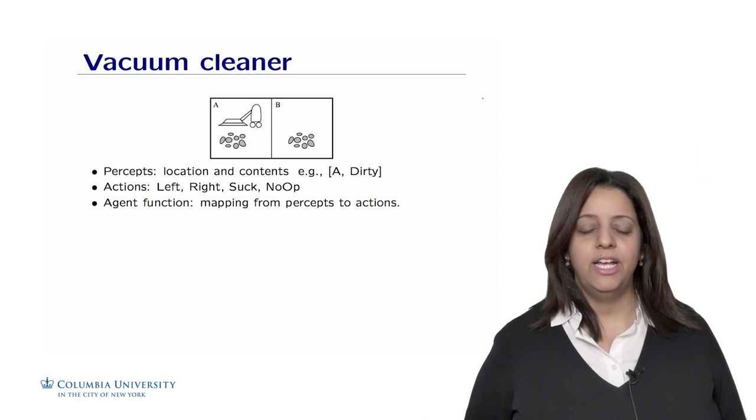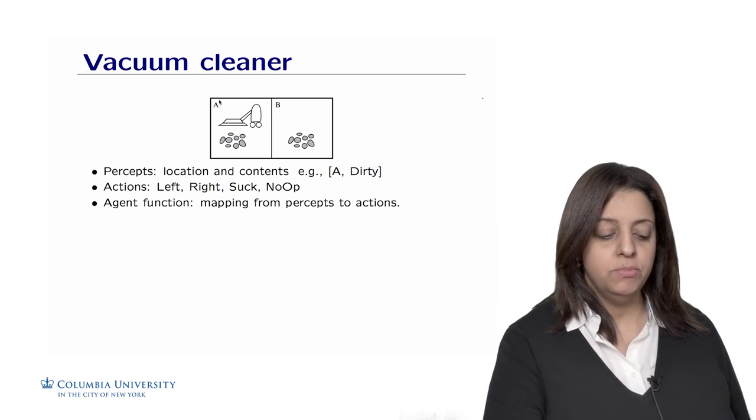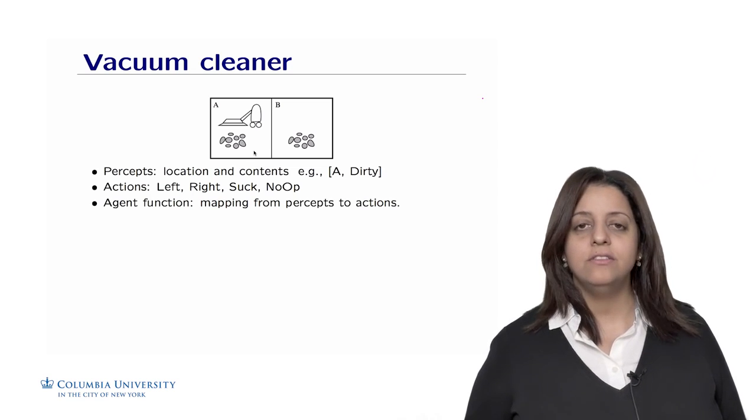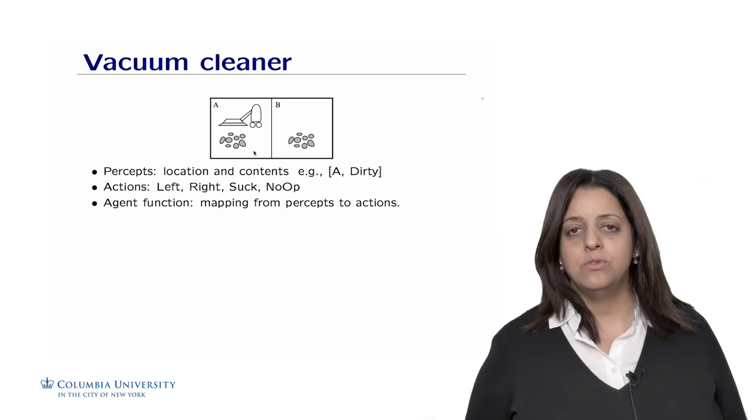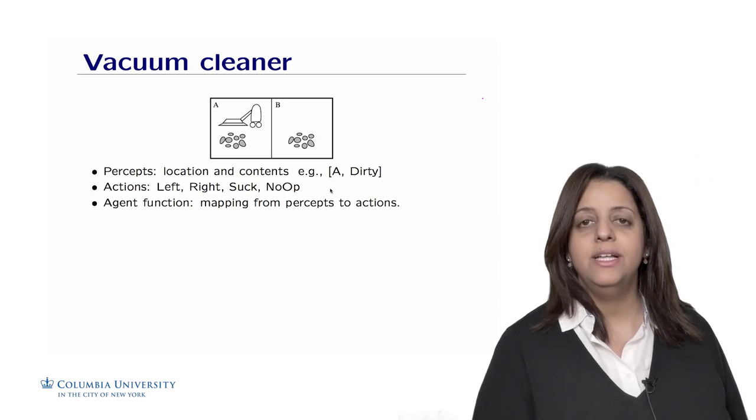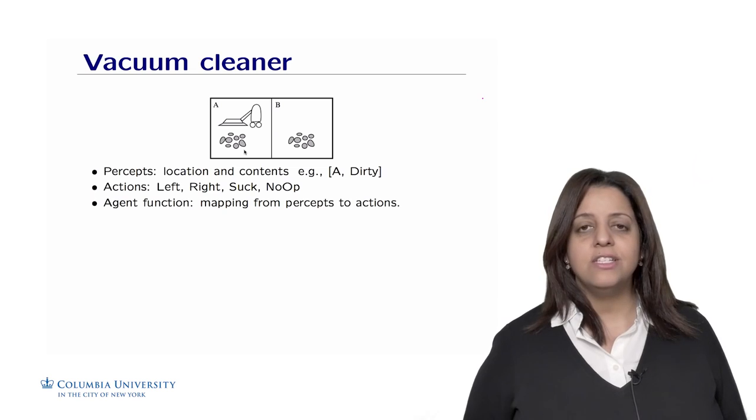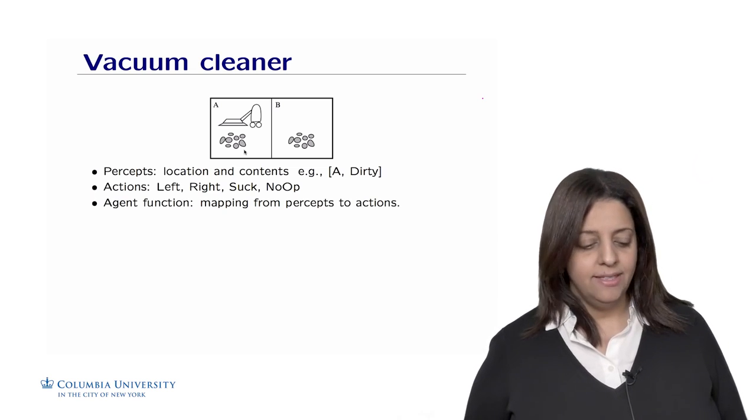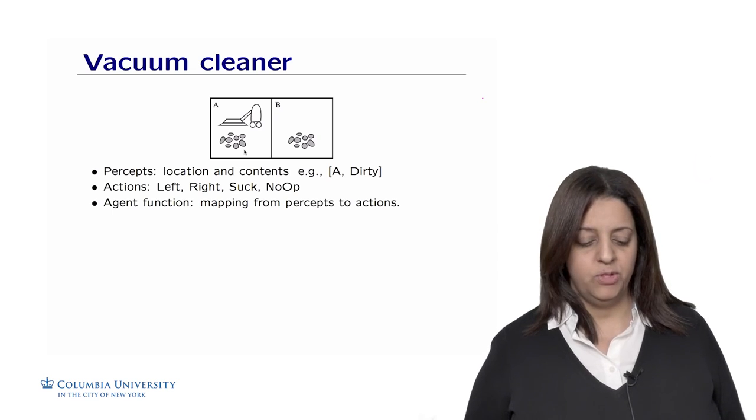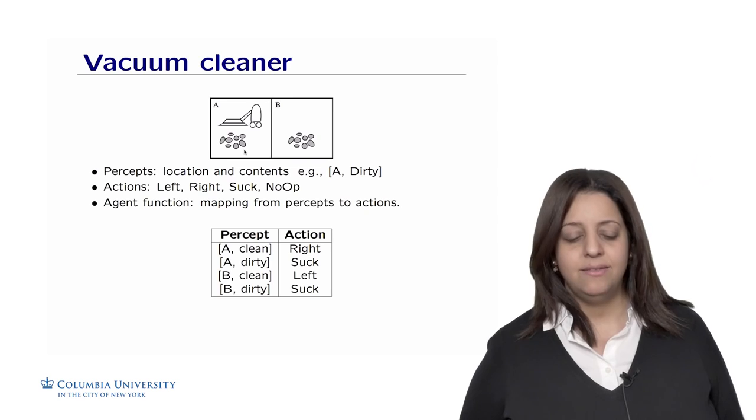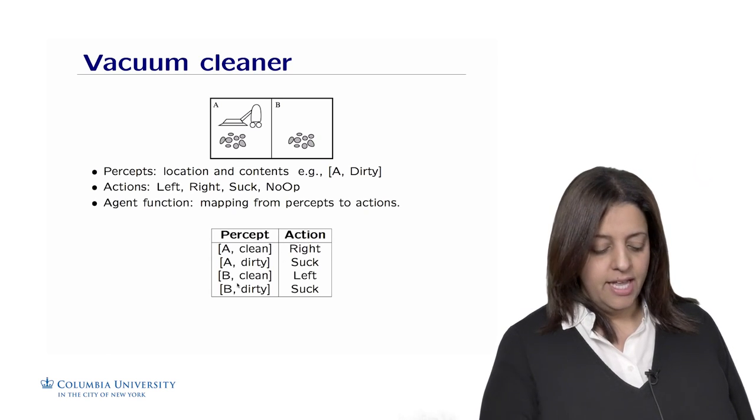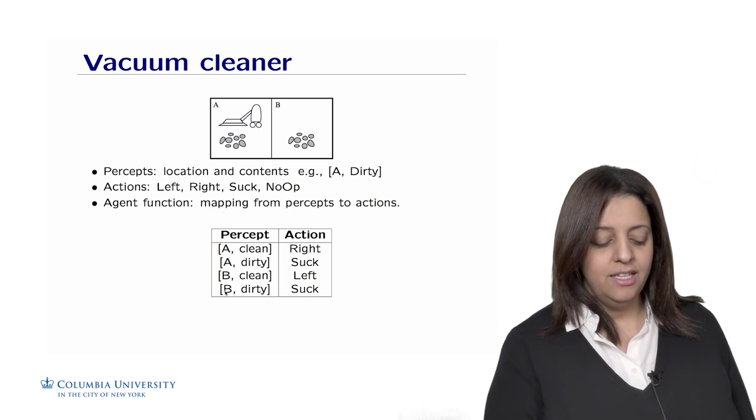Let's take a very simple example of a vacuum cleaner agent that evolves in a small environment with two rooms, room A and room B, and potentially some dirt in the rooms to clean up. The percept of the vacuum cleaner in this environment is the location and the content of the room. For example, if the vacuum cleaner has two sensors, a sensor for dirt and a sensor for location, it could create a percept as a pair, A dirty, for example, is a percept to say that room A is dirty. The actions that the vacuum cleaner can accomplish are going left, going right, suck the dirt, or do nothing if everything is clean. And finally, we are defining an agent function that is a mapping between the set of percepts and the set of actions. And we could write this in a table that has a mapping between percepts and actions. For example, if A is clean, then go right. If A is dirty, then suck the dirt. If B is clean, go left, then check whether there is dirt afterwards. And if B is dirty, then suck it up.